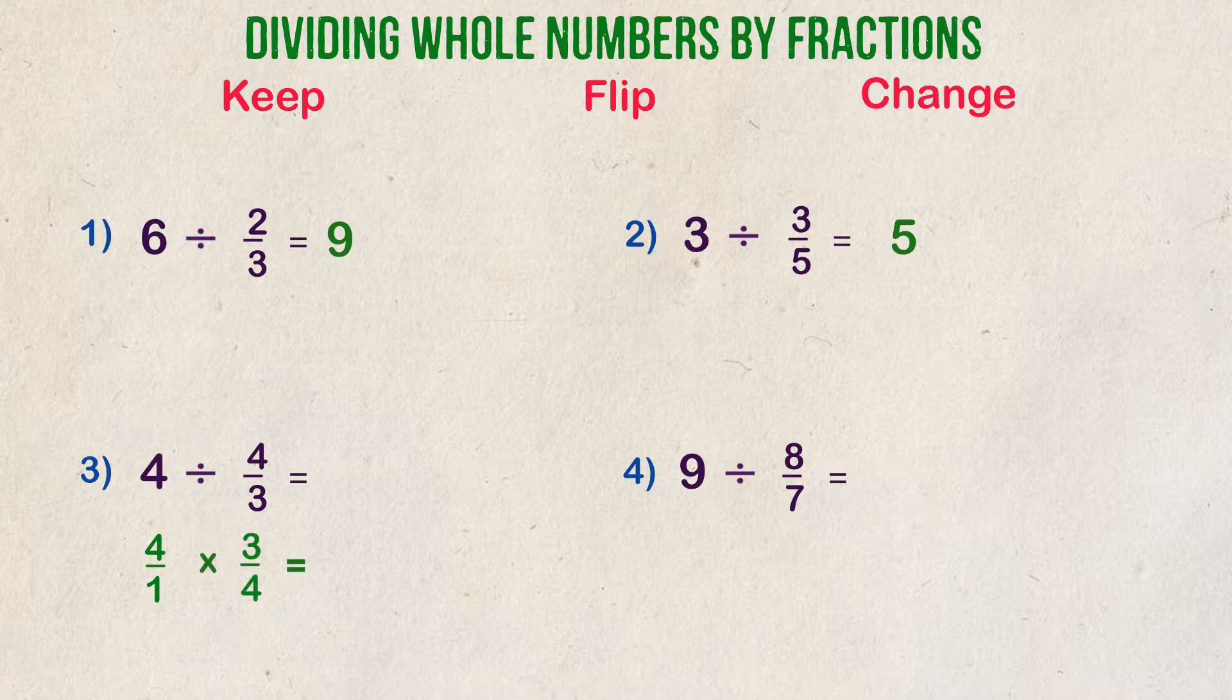4 times 3 is 12. 1 times 4 is 4. 12 over 4 can be simplified down to just 3.